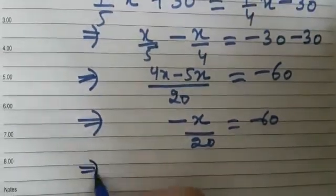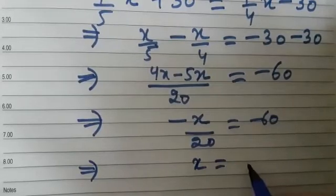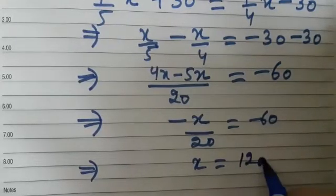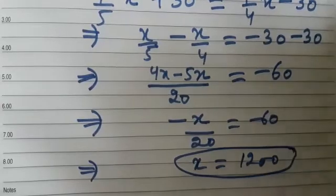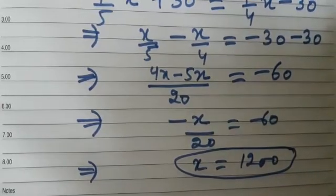Again simplify this. We get x is equal to 1200. So this is the answer. I hope it is clear to you.